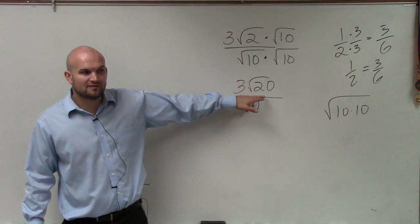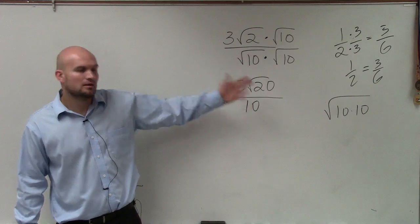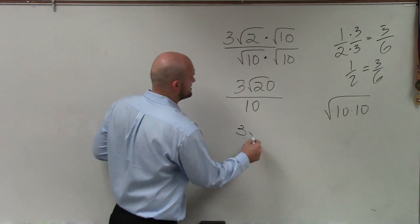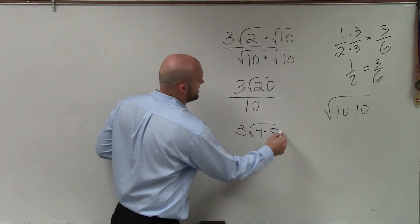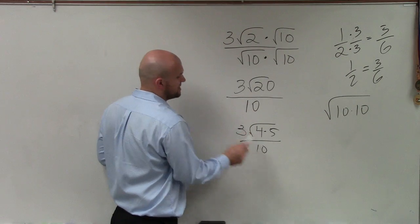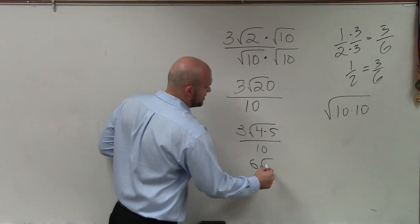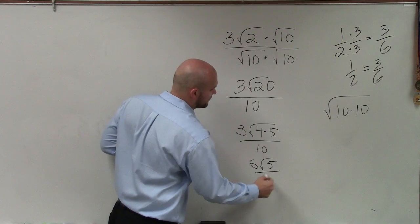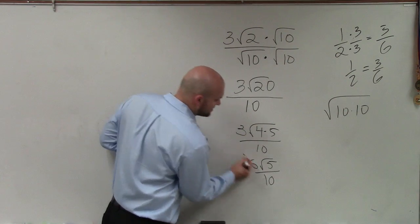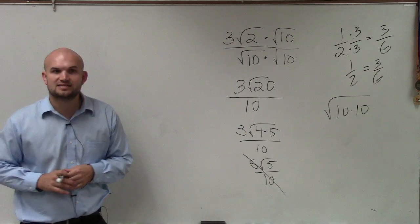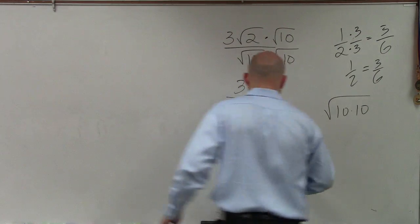Now, can I simplify the square root of 20? Yeah, you can rewrite this. So it would be 3 times the square root of 4 times 5 divided by 10. The square root of 4 is 2. 2 times 3 is 6. Square root of 5 over 10. Then we can always simplify our fraction. 6 tenths is the same thing as 3 fifths.